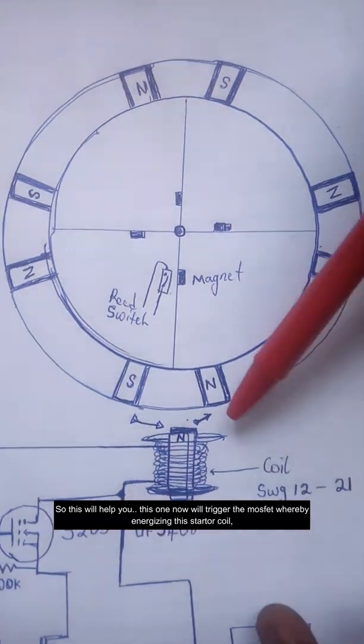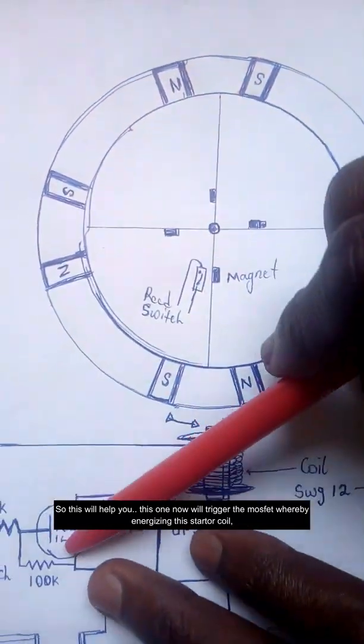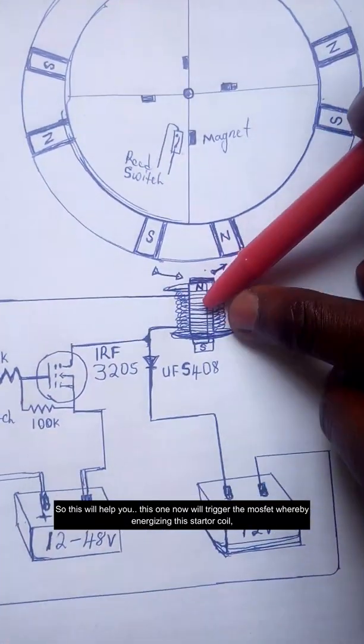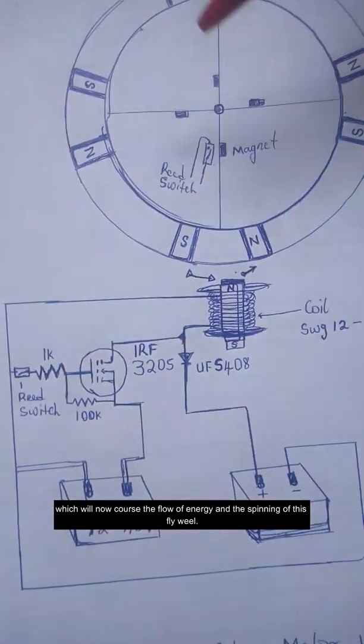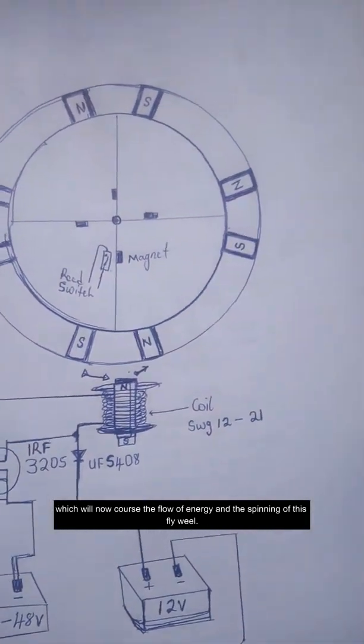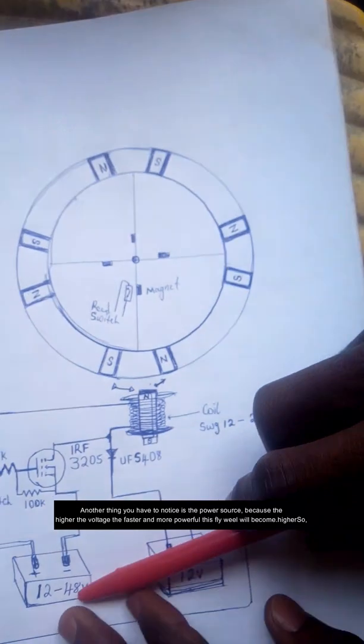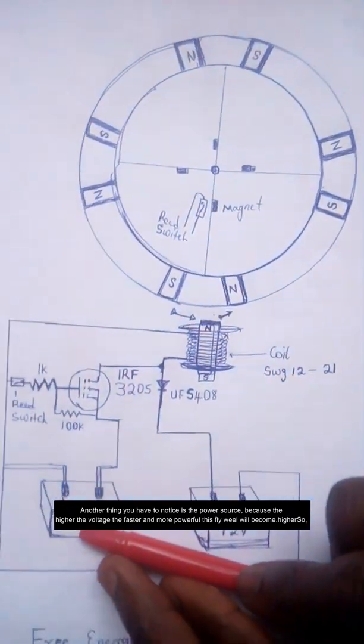We have another set of magnets apart from the ones that are connected outside. This one will trigger the MOSFET, thereby energizing this starter coil which will cause the flow of energy and the spinning of this flywheel. Another thing you have to notice is the power source, because the higher the voltage, the faster and the more powerful this flywheel will become.